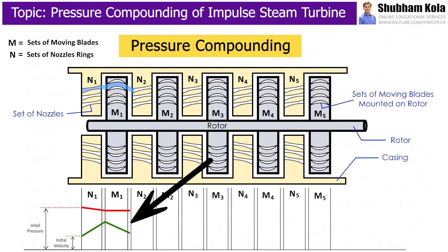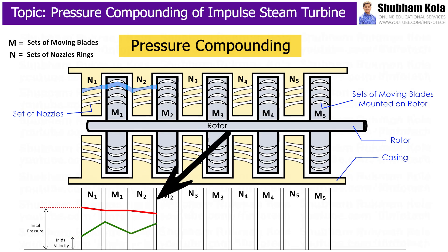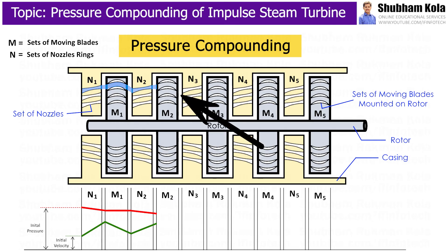Here, velocity of steam gets reduced. Now, this low-velocity and high-pressure steam is passed over the second set of nozzles N2. Thus, pressure of steam is again partly reduced to raise the velocity of steam. Again, this high-velocity steam is passed over the second set of moving blades M2 to give momentum to the moving blades and rotate the rotor.